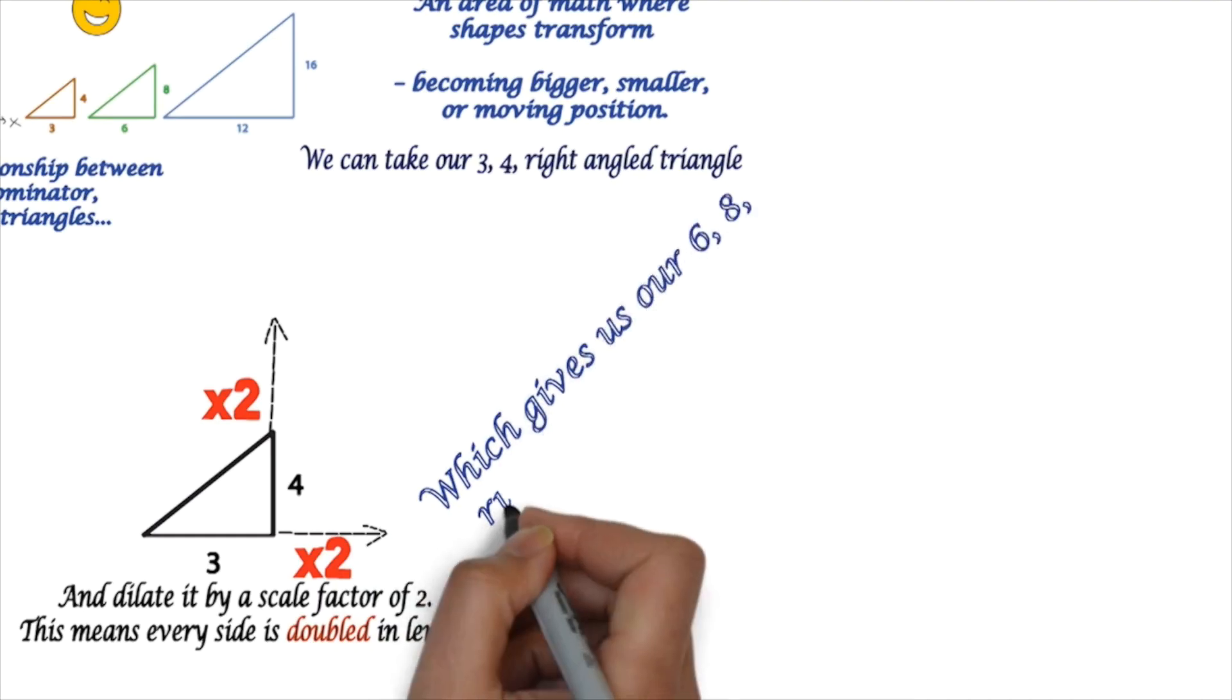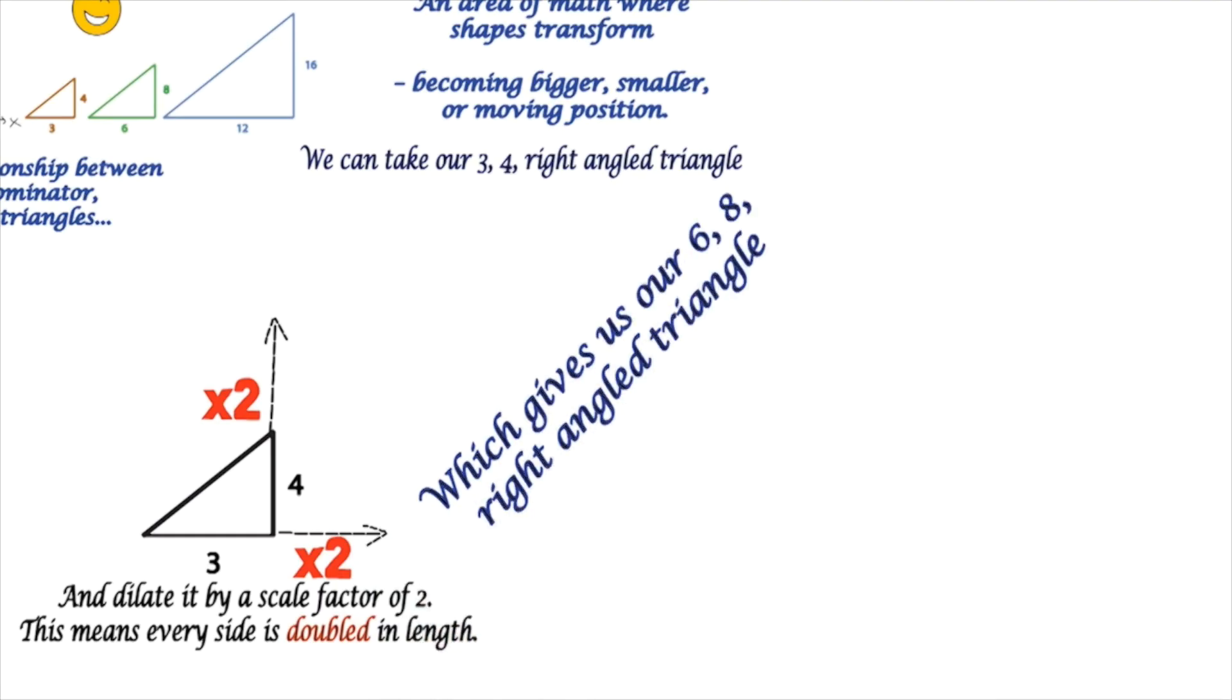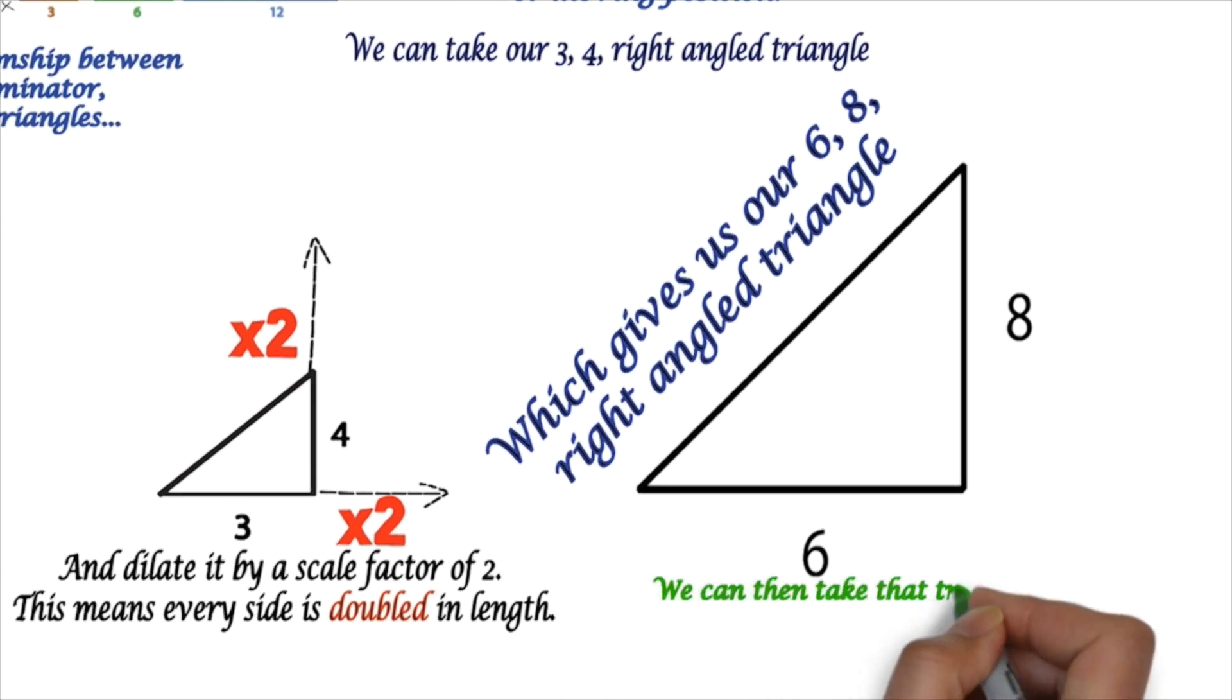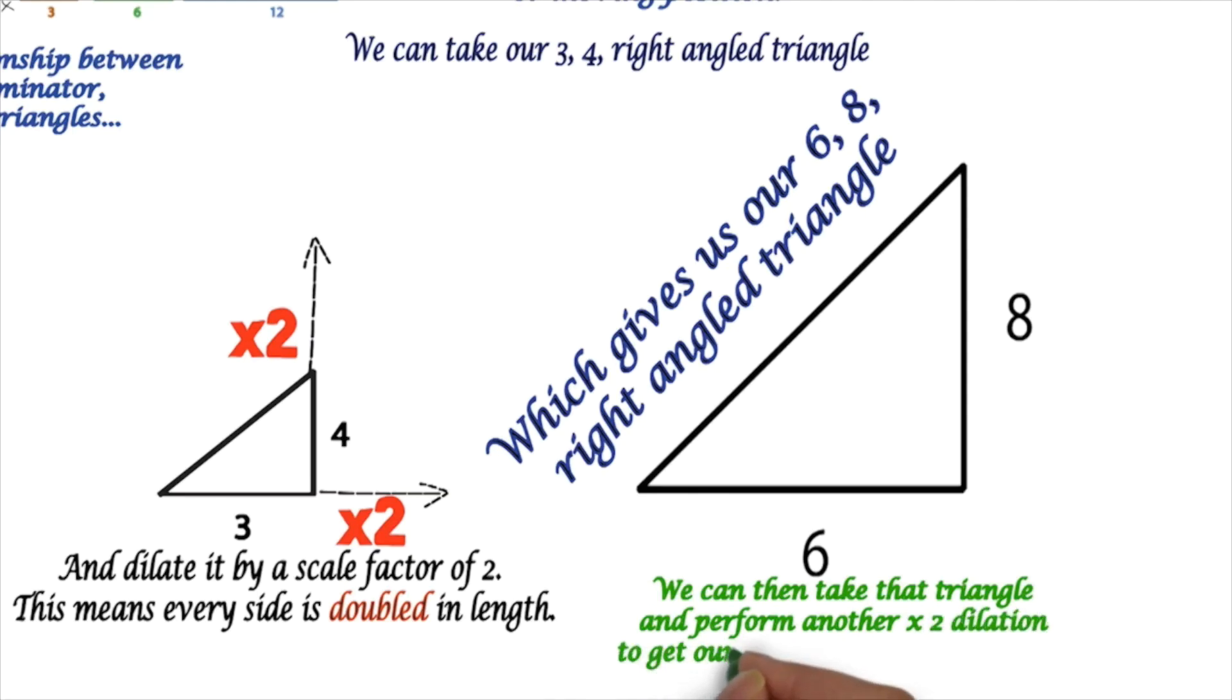That gives us a different triangle, and in fact it gives us our 6-8 right-angled triangle. We can then take that triangle and perform another times 2 dilation to get our 12-16 right-angled triangle.